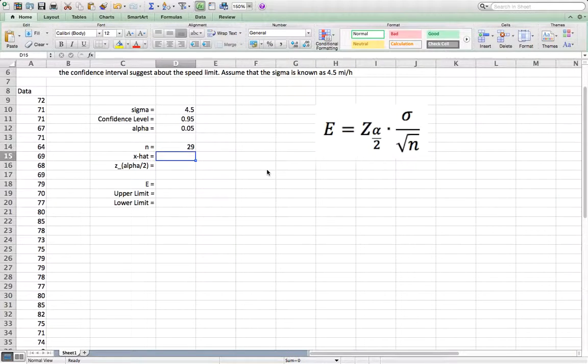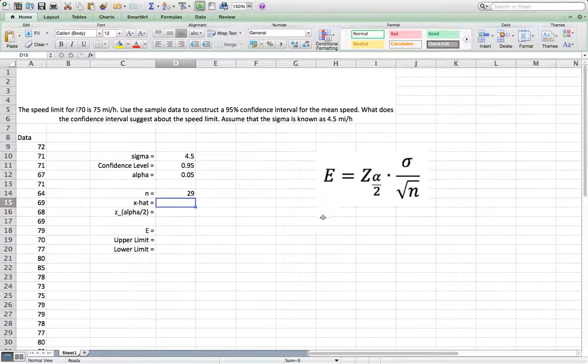Now notice, to use this formula, the requirement is that either the population is normally distributed or the sample size is greater than 30. So now we assume the population is normally distributed. Okay, so the sample size is only 29 is fine.